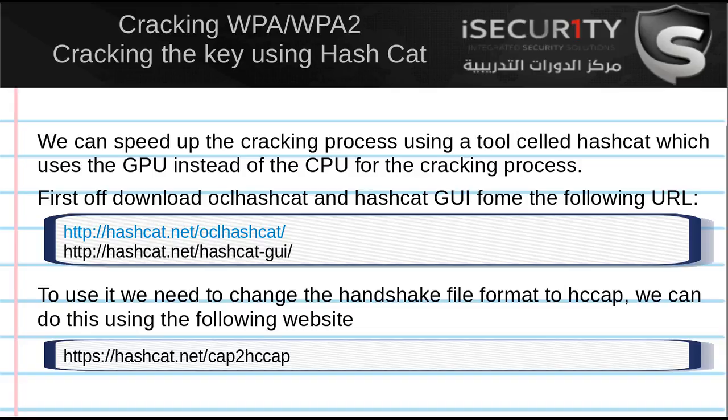In the first method, aircrack-ng was using the CPU to calculate the PMKs. In the second video we calculated the PMKs first and then used aircrack-ng with the ready PMK database. In both methods we were using the CPU to do all the computations. GPUs are usually quicker than CPUs, so if you have a strong powerful GPU, the cracking process can be much quicker.